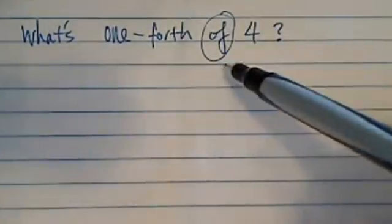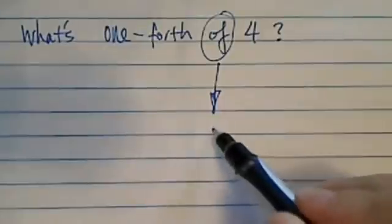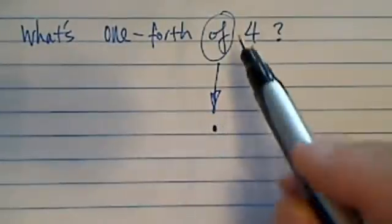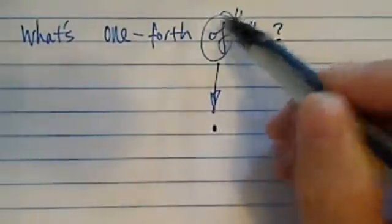The word of, this is the first, the very easy step where we're starting translating a word problem into equations. The word of literally means multiply.